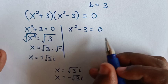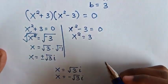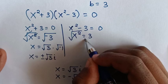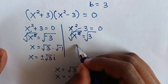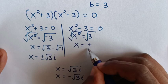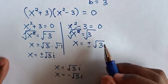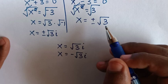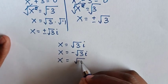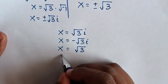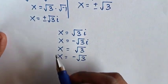From the second case, we take negative 3 to the right side, so x square is equal to 3. We apply square root on both sides — the square root cancels with the square. Then x is equal to plus or minus square root of 3. So we have two values: x equals positive square root of 3, and x equals negative square root of 3.